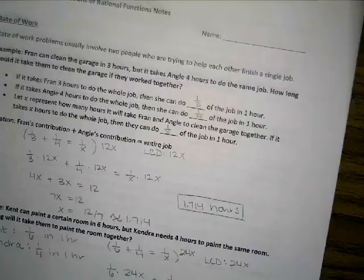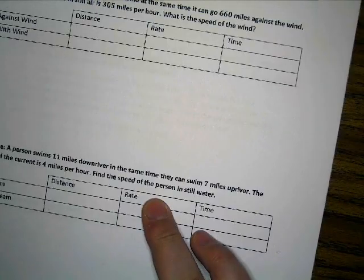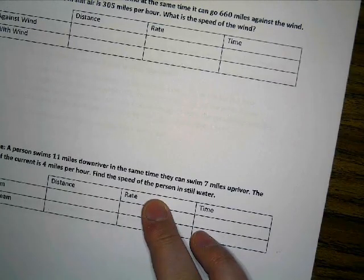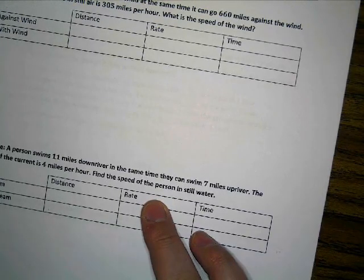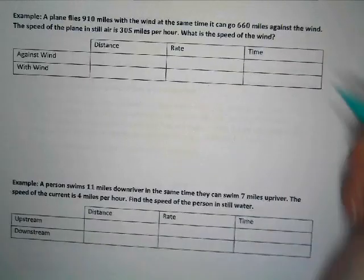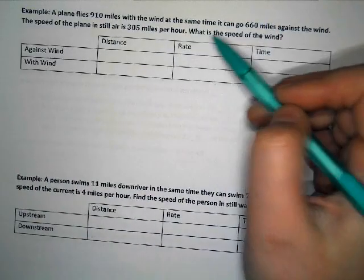Let's go ahead and turn to the other problems that we need to finish. So we have a plane flies 910 miles with the wind. At the same time, it can go 660 miles against the wind.